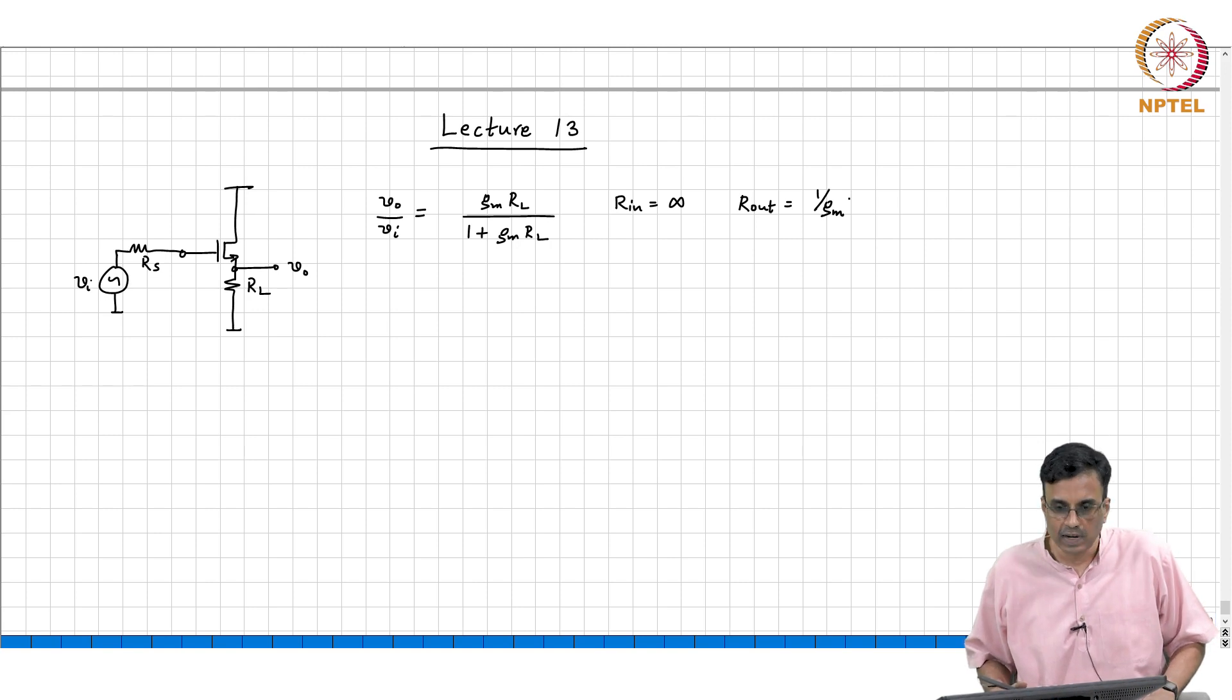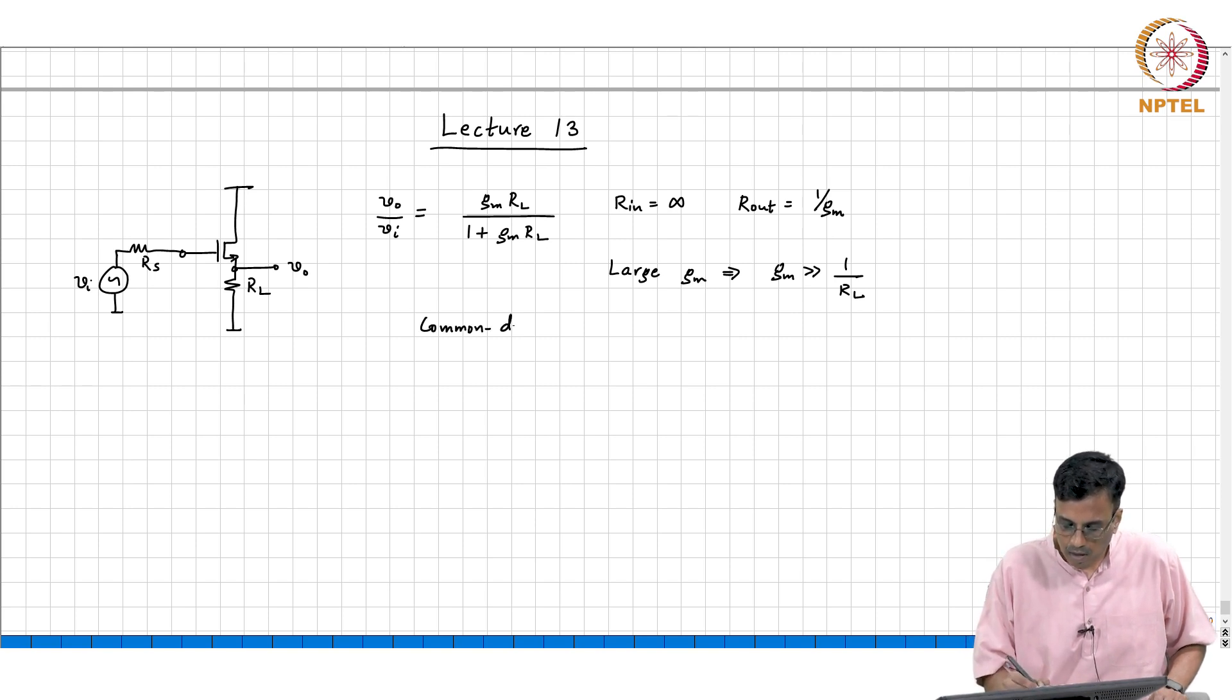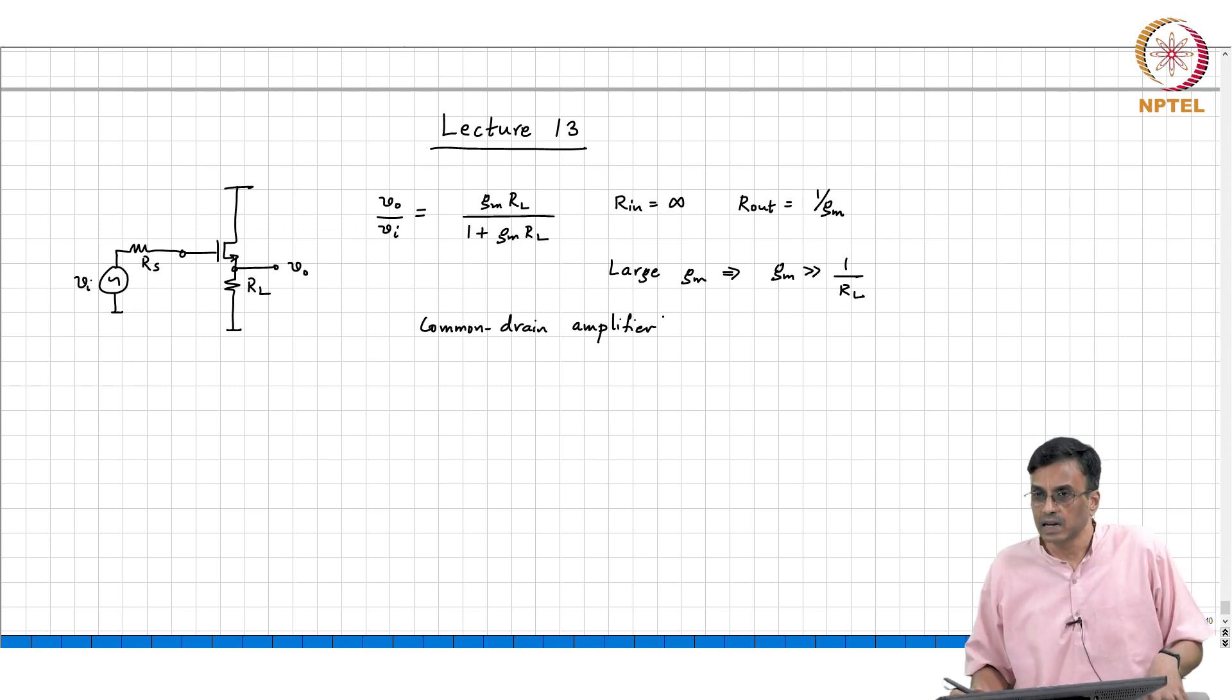In practice, Gm will not tend to infinity. All we can say is that we make it large, and like everything else, large is a context dependent thing. In this context, large Gm means that Gm is much much larger than 1 by RL. Towards the end of the last class, we said this circuit is called the common drain amplifier because the drain in the incremental network is common to both the input source as well as the load.